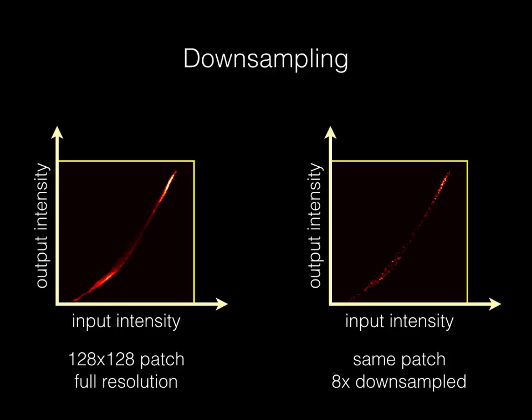To model the transformation as a curve, we need to fit a parametric model to the data, including in regions with few samples or even no samples at all, so that the transformation is valid for any input. For that, we will assume that the curve is smooth since the full resolution patch will be near the downsample of the one, and we don't want to amplify noise.